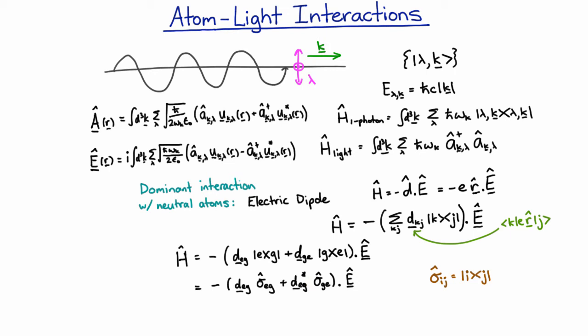Much more surprising, you also have the cross terms. So these two things can happen. So you can have the atom get excited and you get an extra photon, which sounds like it doesn't conserve energy.